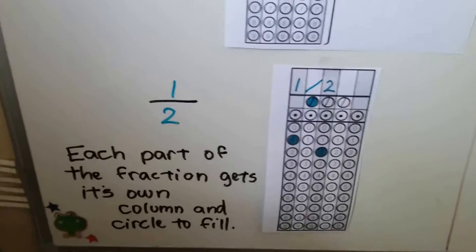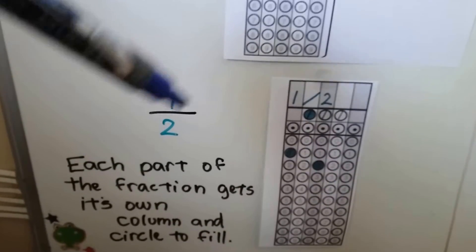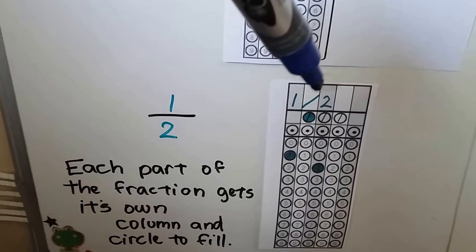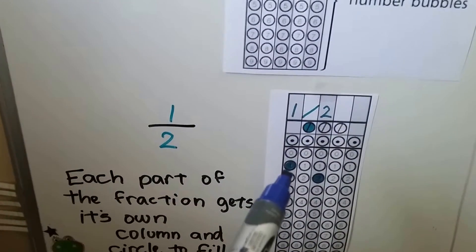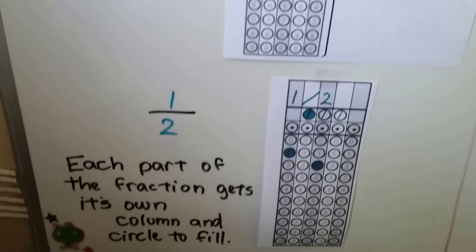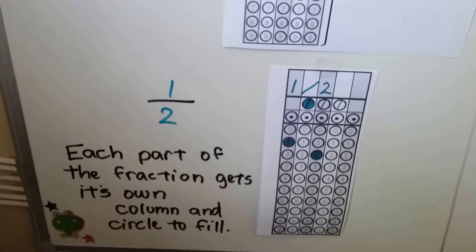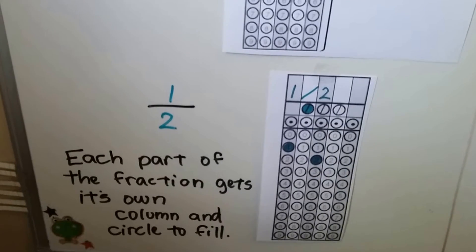If we have 1 half, we have a 1 for numerator, our fraction bar, and the 2 for denominator. We fill in the circle for the 1, the circle for the slash, and the circle for the 2. Each part of the fraction gets its own column and circle to fill. If it's left blank, we leave the circles blank.